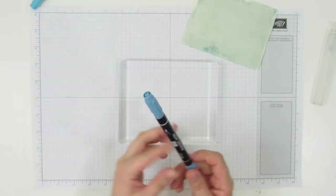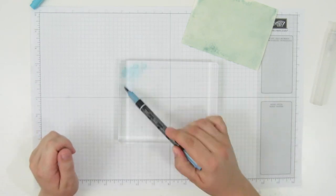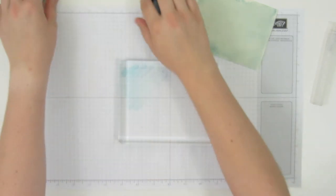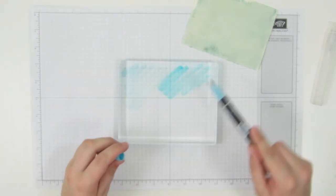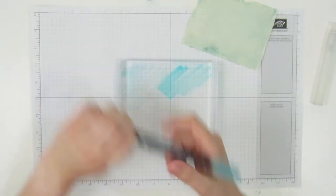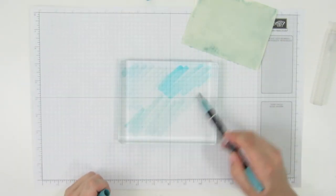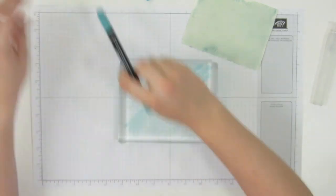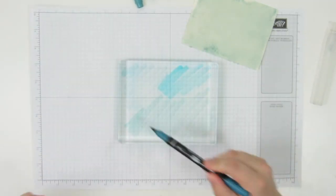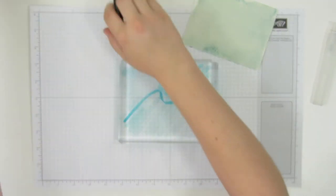So all I'm going to do is use the brush tip of a few different markers and just scribble some different colors onto the block. You can go in with some of your darker colors and do some little squiggles.